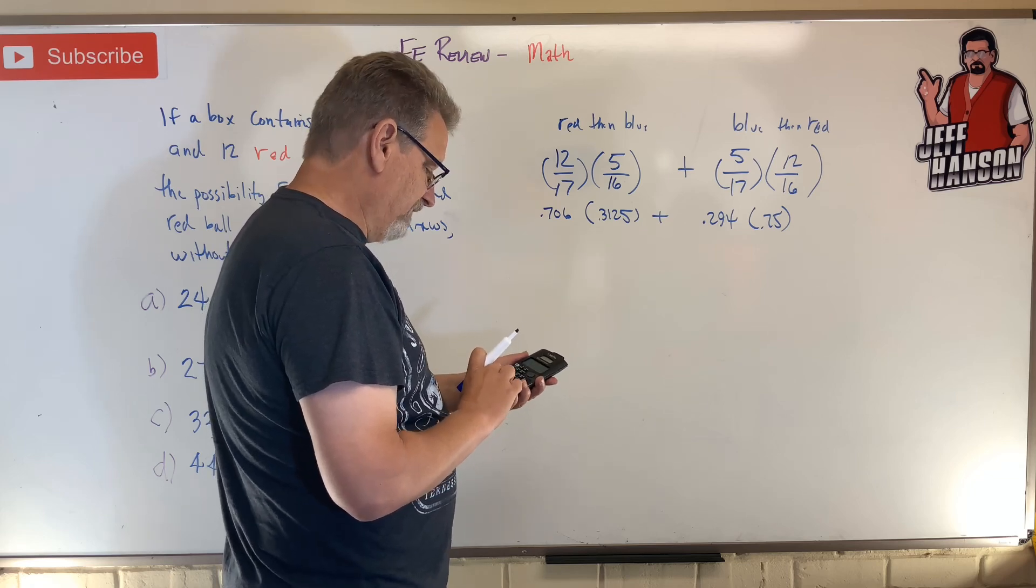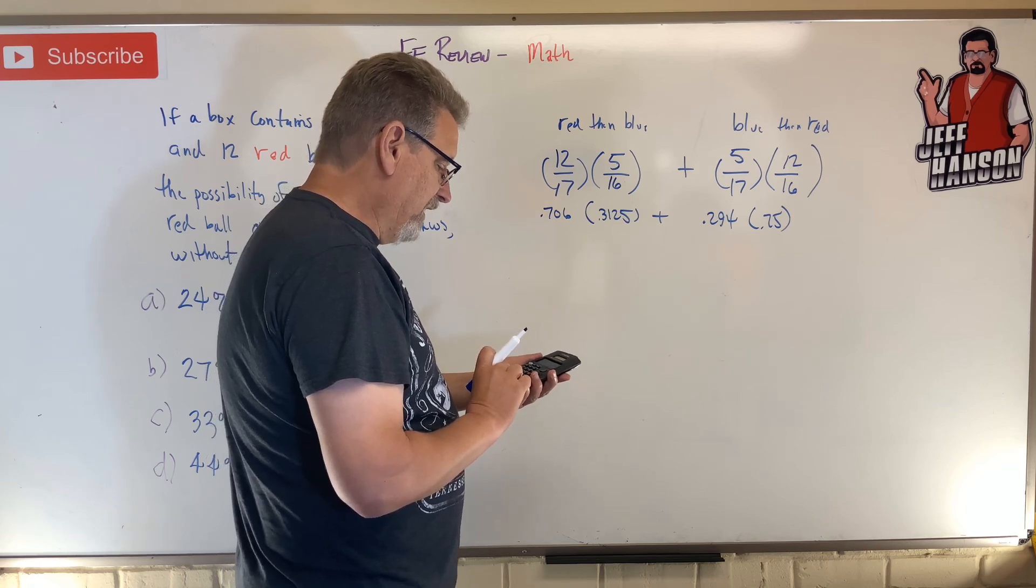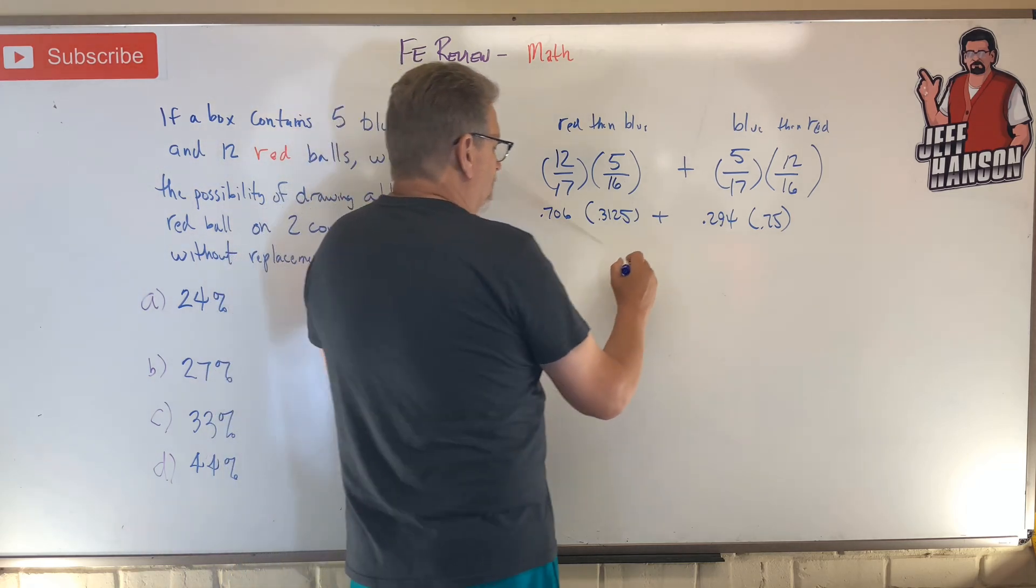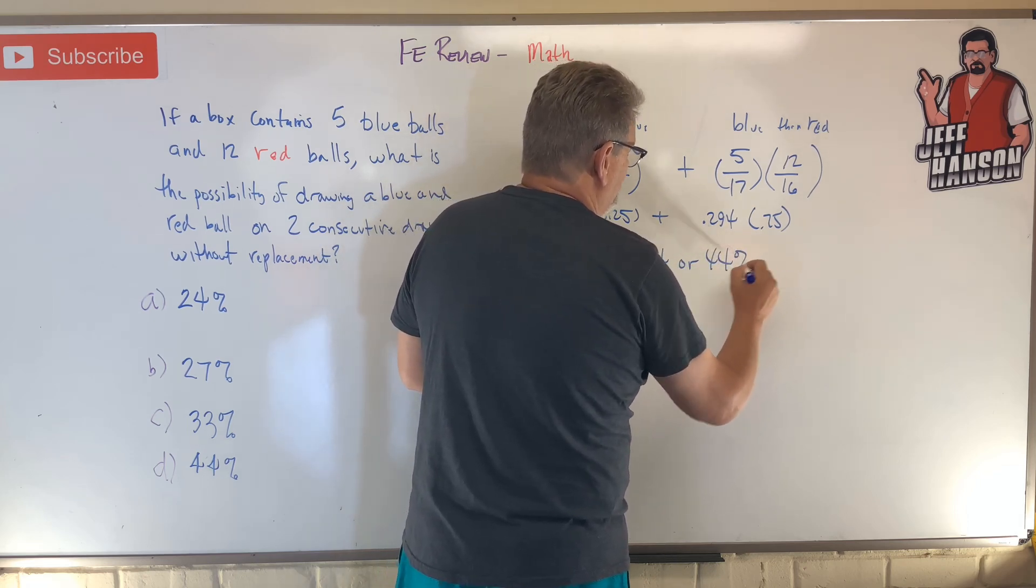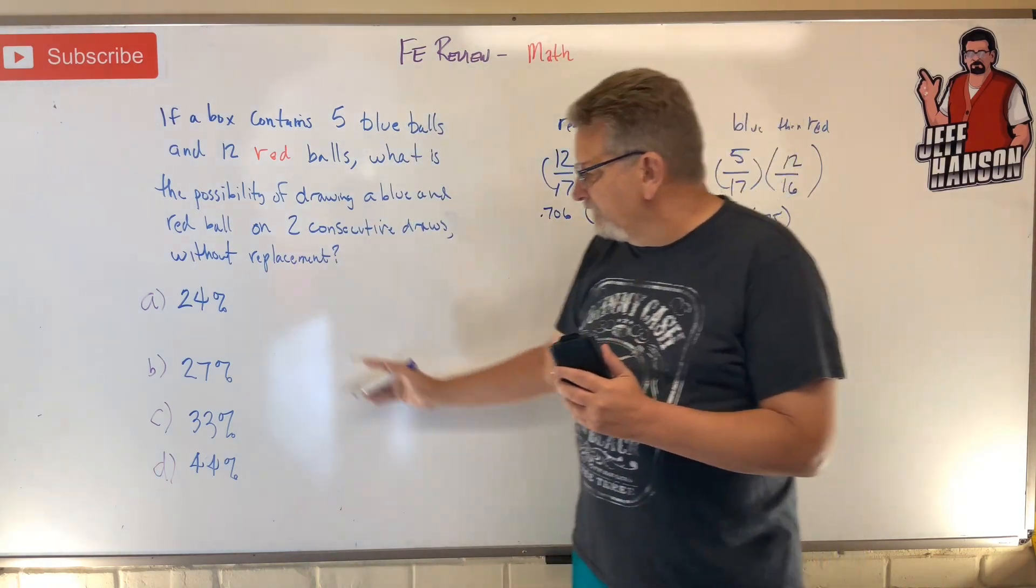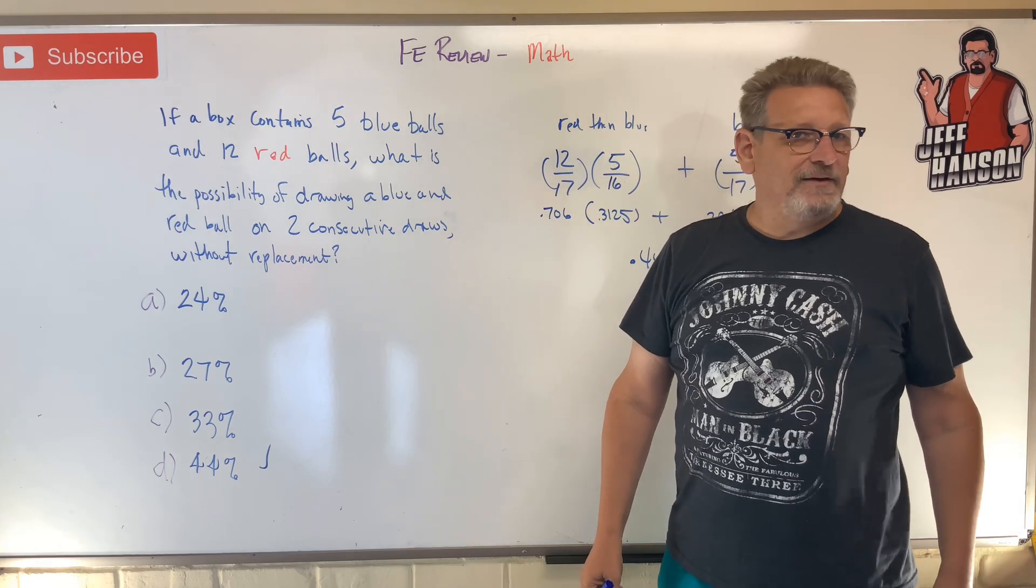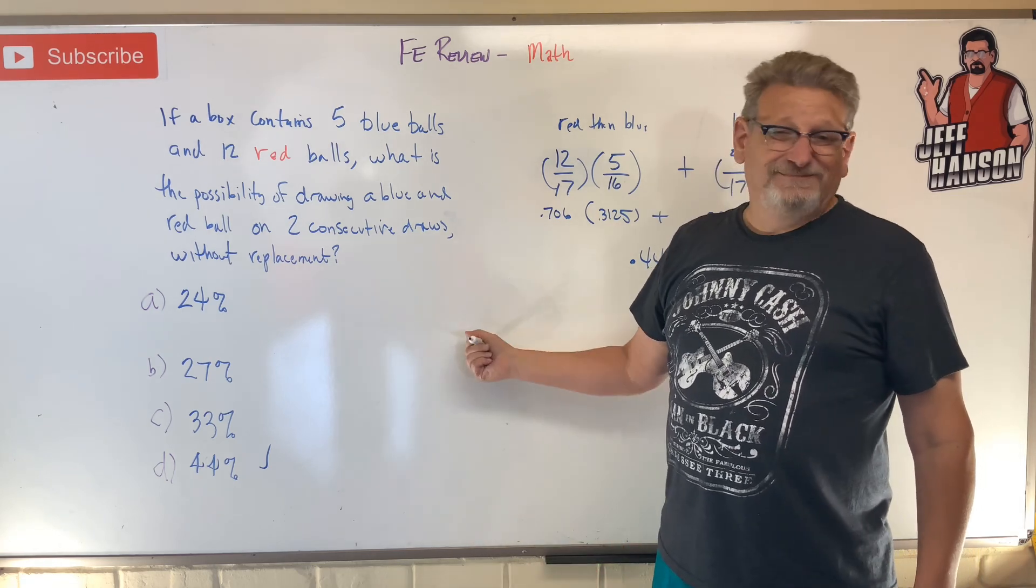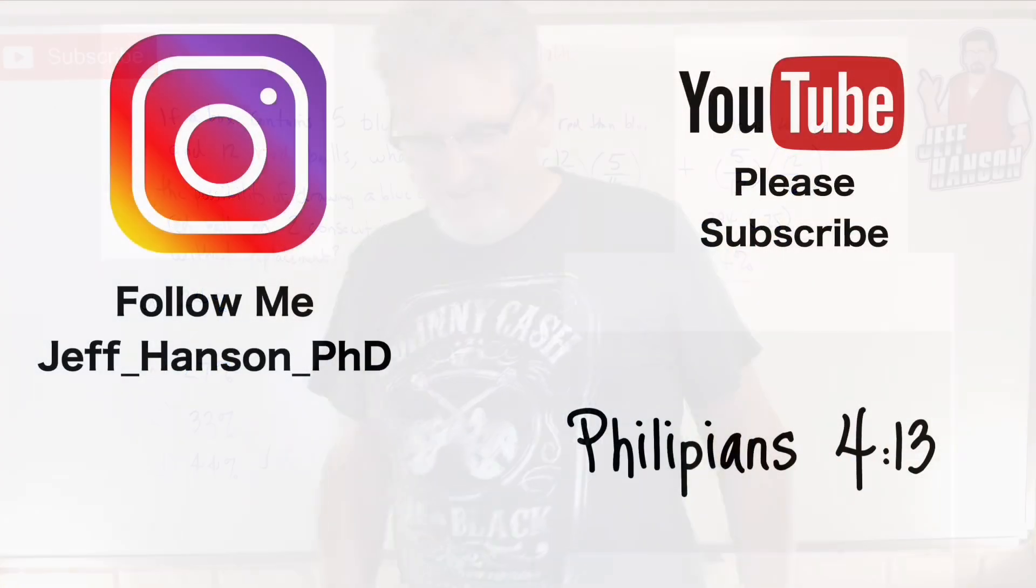0.44, or a 44 percent chance of that happening. 44 percent, there we go, boom boom. And that's how you do that. Don't worry, no one likes these problems. Okay, let's do another one.